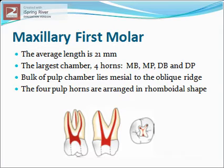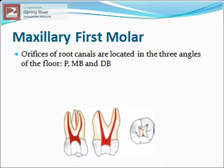Maxillary first molar: the average length is about 21 mm. It has the largest pulp chamber with four pulp horns: mesiobuccal, mesiopalatal, distobuccal, and distopalatal. The bulk of the pulp chamber lies mesial to the oblique ridge, and the four pulp horns are arranged in a rhomboidal shape, which is also the shape of the access cavity. The orifices of the root canals are located in three angles of the floor of the pulp chamber: palatal, mesiobuccal, and distobuccal. The palatal orifice is the largest and the easiest to locate.